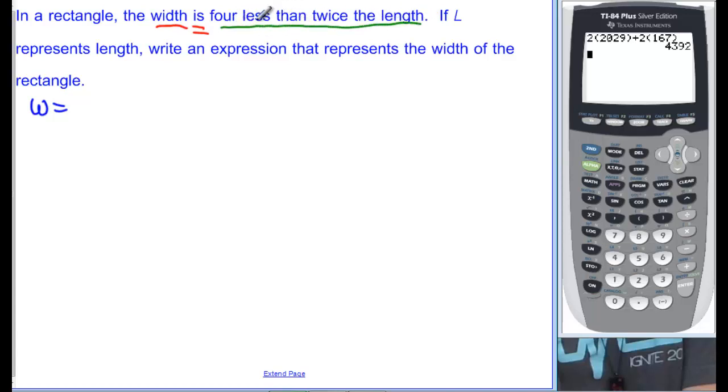Now if you remember from translating, when you see that 'then', we have to switch them. So the 4 is going to be on this side, and twice the length is going to be this side. So twice the length is actually going to be first. So that's 2 times the length, and it says up here that L represents length. So that's 2L. Less than means minus, and then 4 less than that would be minus 4. 2L minus 4 is what width is equal to. They didn't give us anything else, so we're done with that one. They didn't give us numbers to plug in, we just needed the expression.